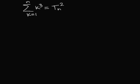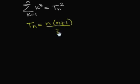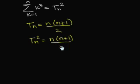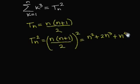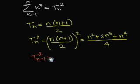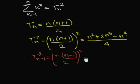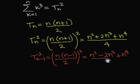This is a very interesting relation that, as we have just seen, is valid for the first 5 triangular numbers. We have already shown that t sub n is equal to n times (n plus 1) over 2. Squaring that, we get t sub n squared is equal to n times (n plus 1) over 2, all squared, which is equal to n squared plus 2 times n to the cube plus n to the fourth, over 4. And t sub (n minus 1) squared is equal to n times (n minus 1) over 2, all squared, which is equal to n squared minus 2n to the cube plus n to the fourth, over 4.